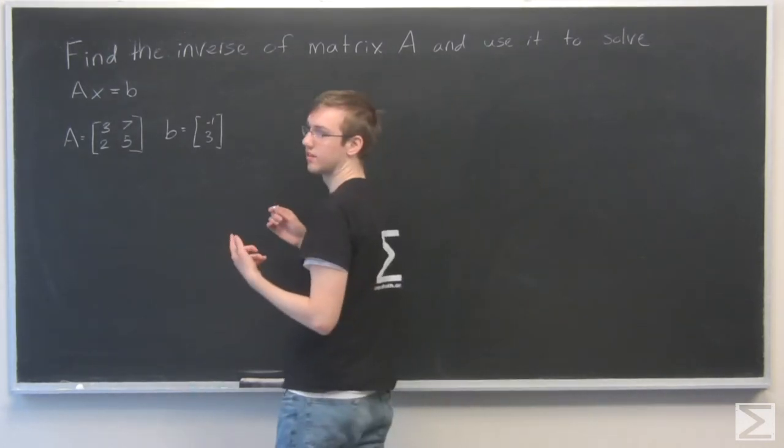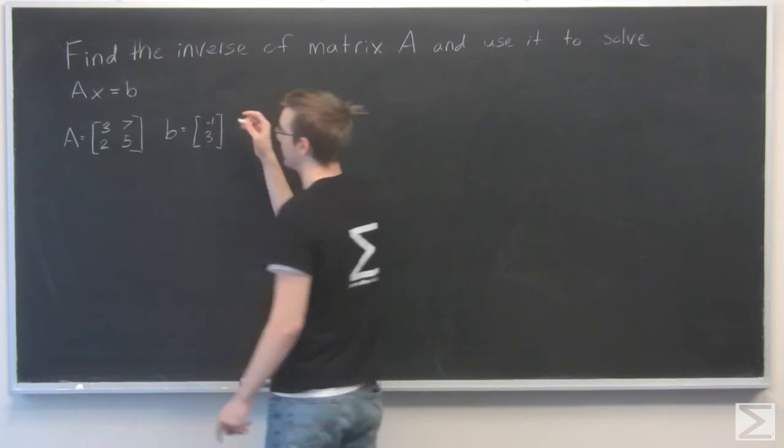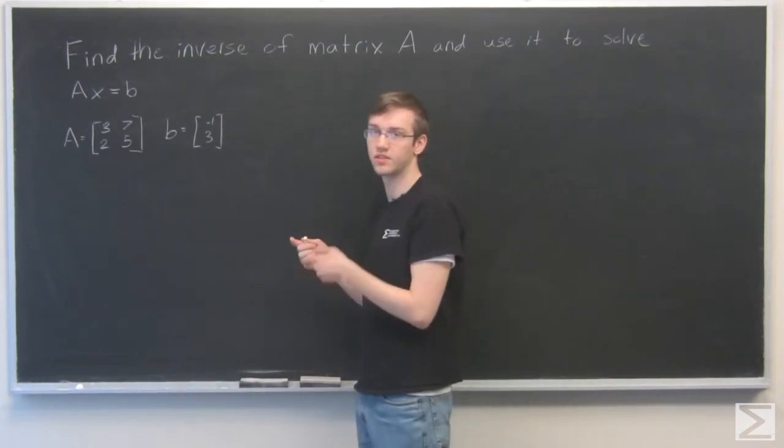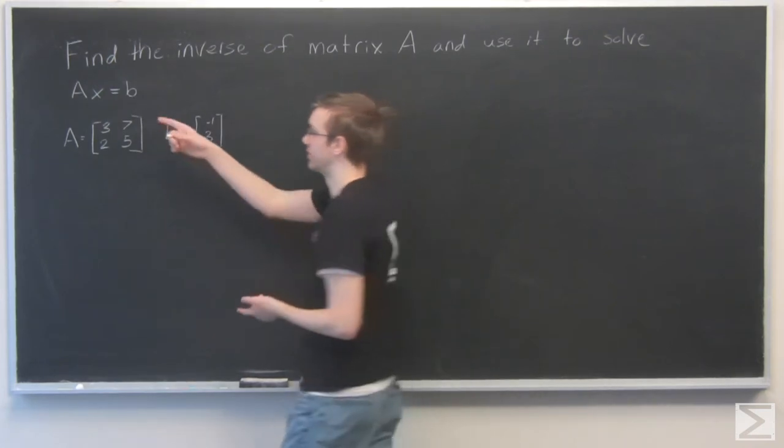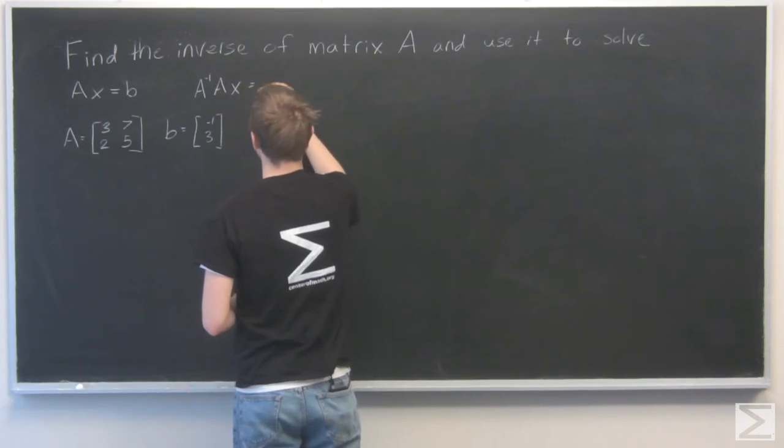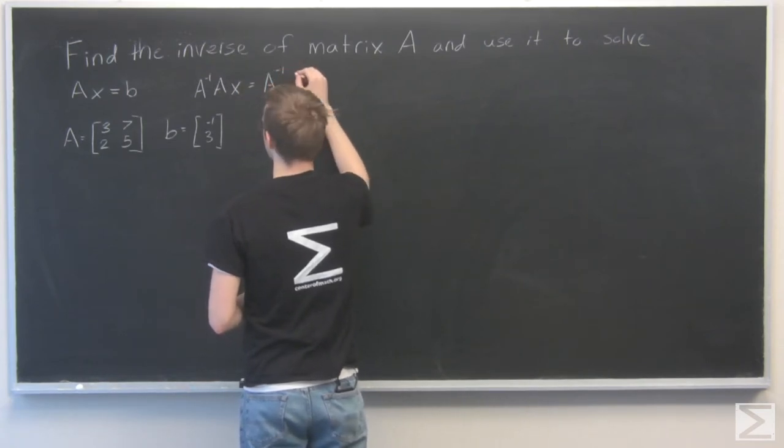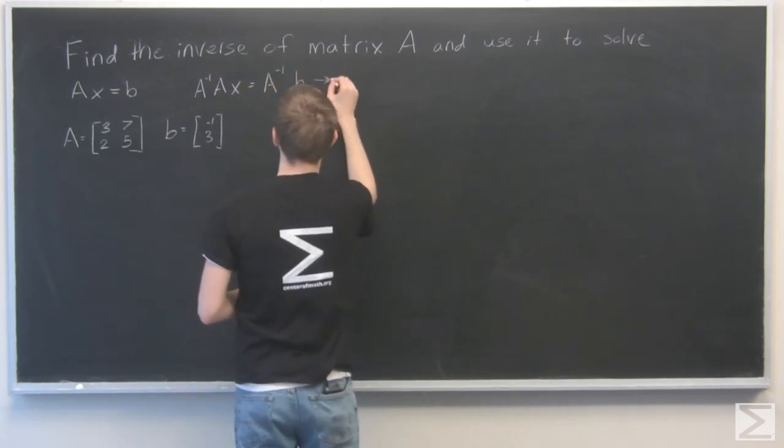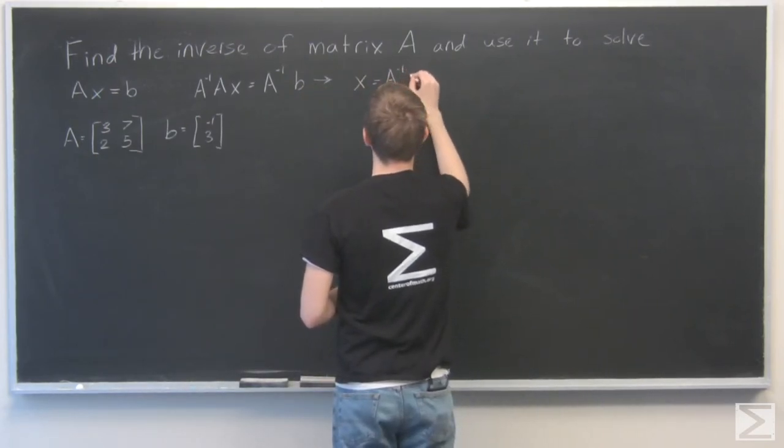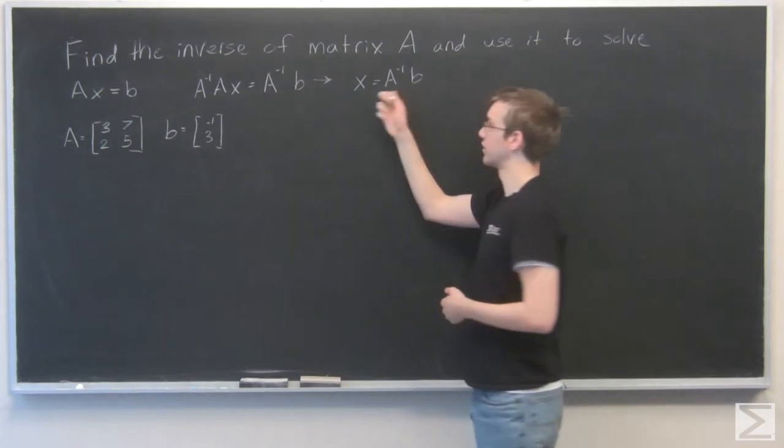The inverse of A is A to the minus 1, and A to the minus 1 times A times matrix A is going to equal the identity matrix, so that'll just disappear in this equation. If we have A to the minus 1 times A, x equals A inverse b. That just reduces to x equals A inverse b. So that's how we're going to solve for x.